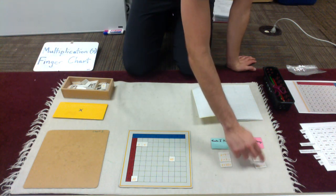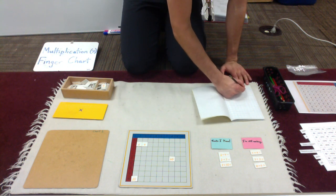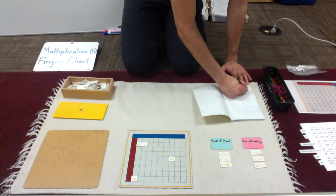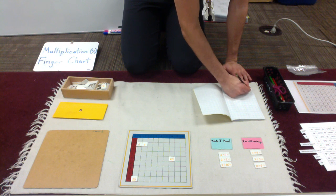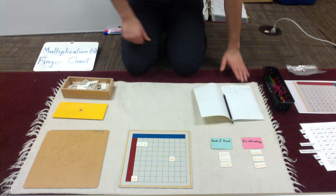8 times 6 is 48. Clearly a fact I'm still practicing. See it, say it, write it. 8 times 6 equals 48. Alright.